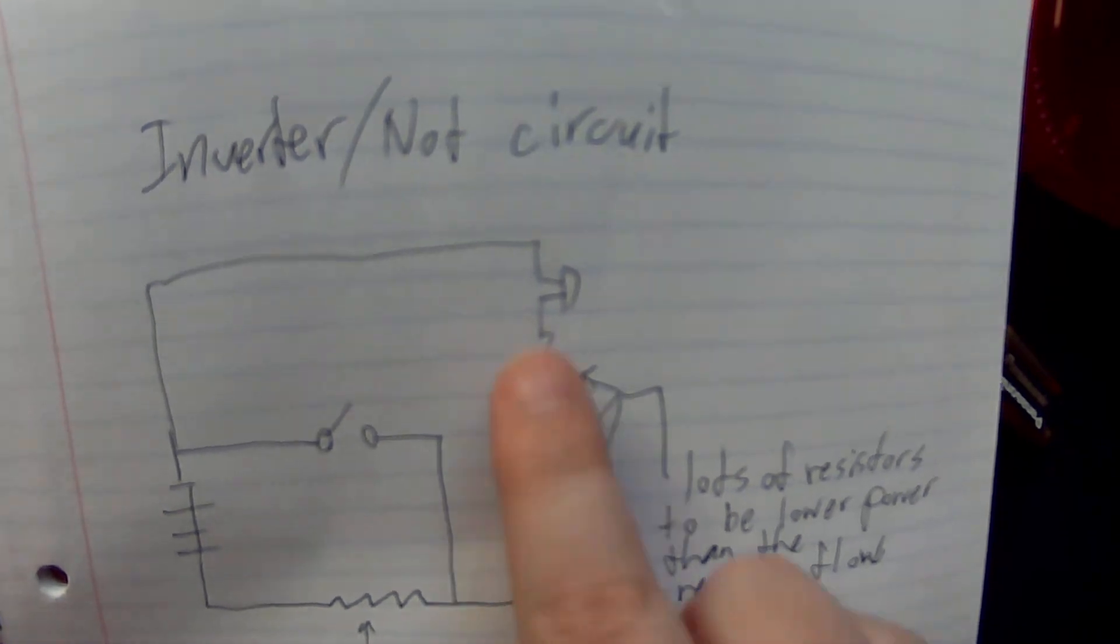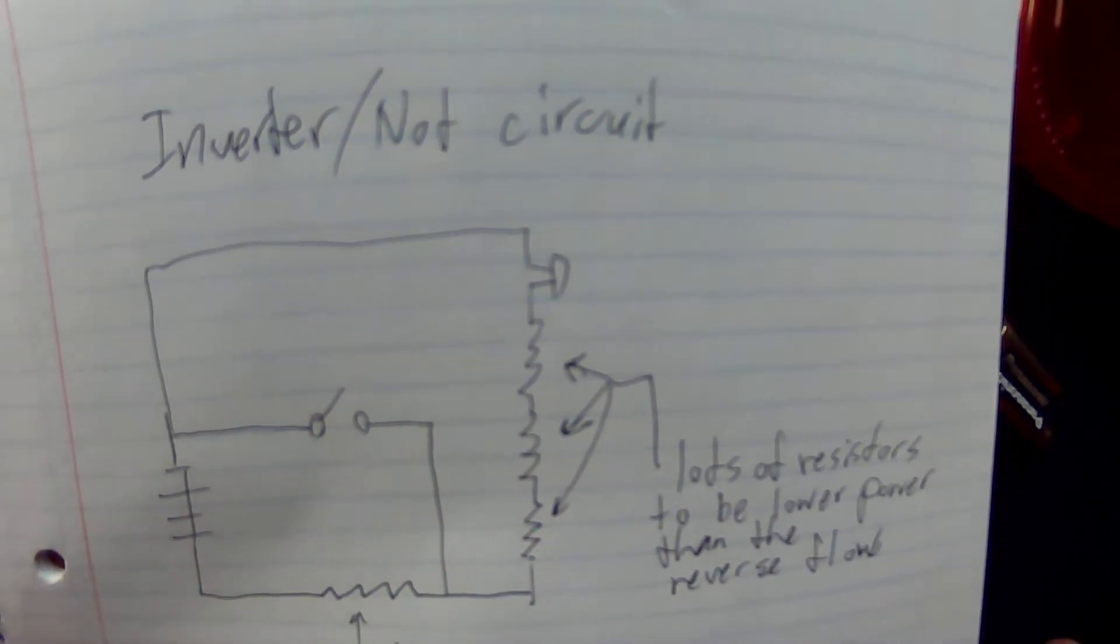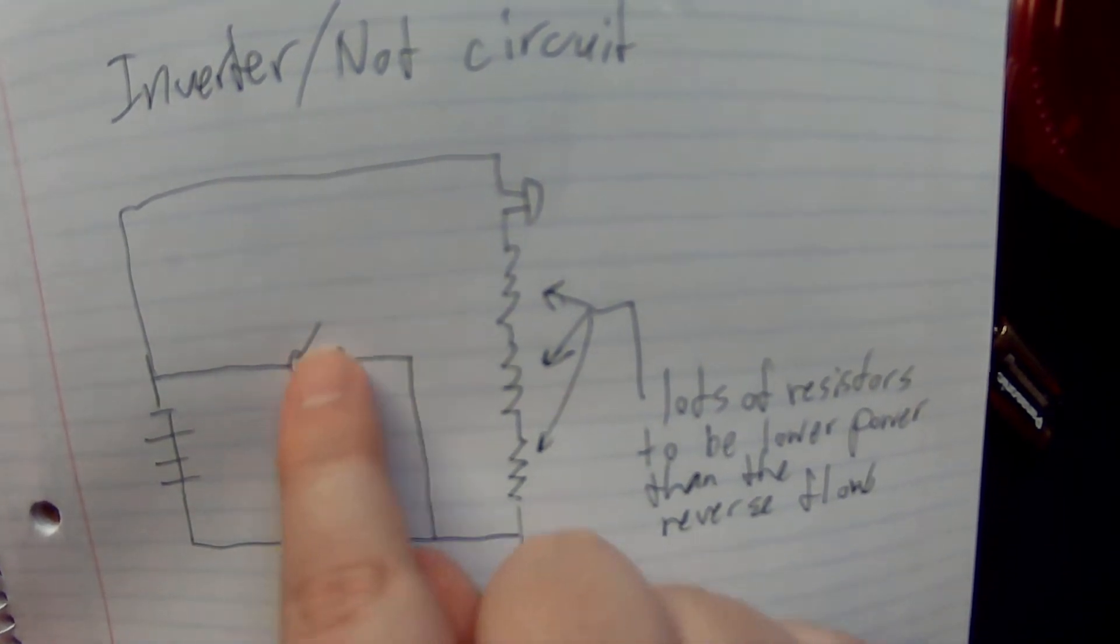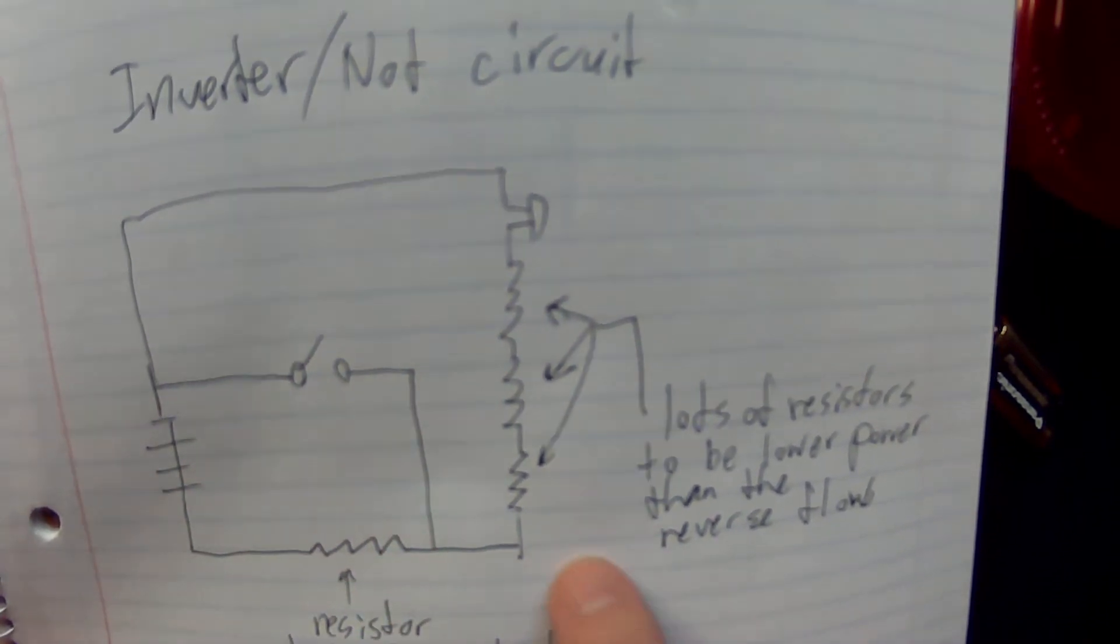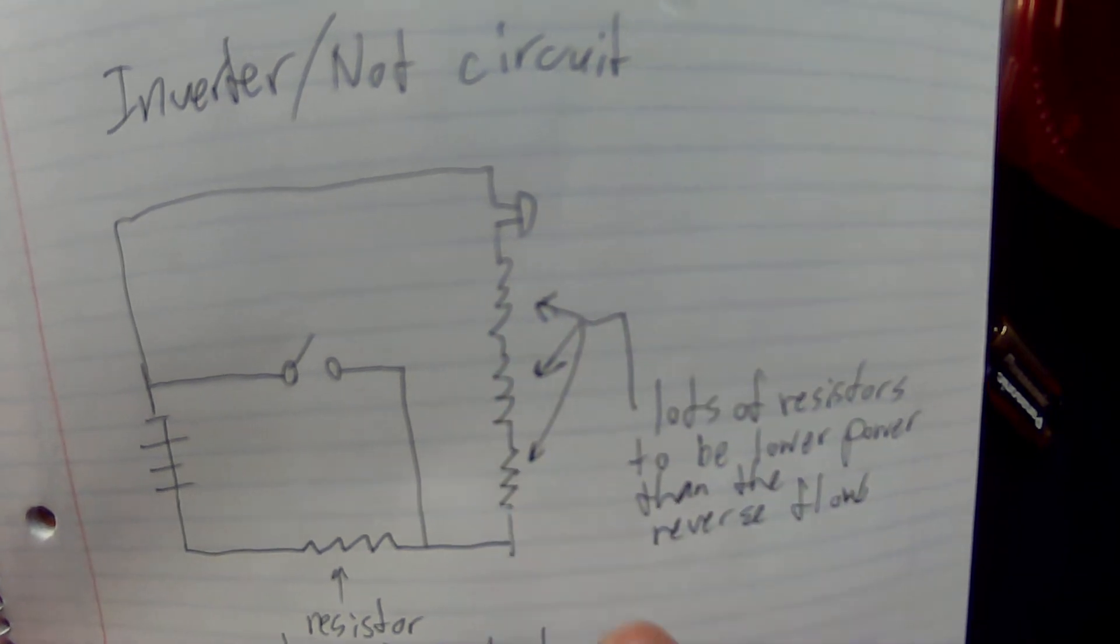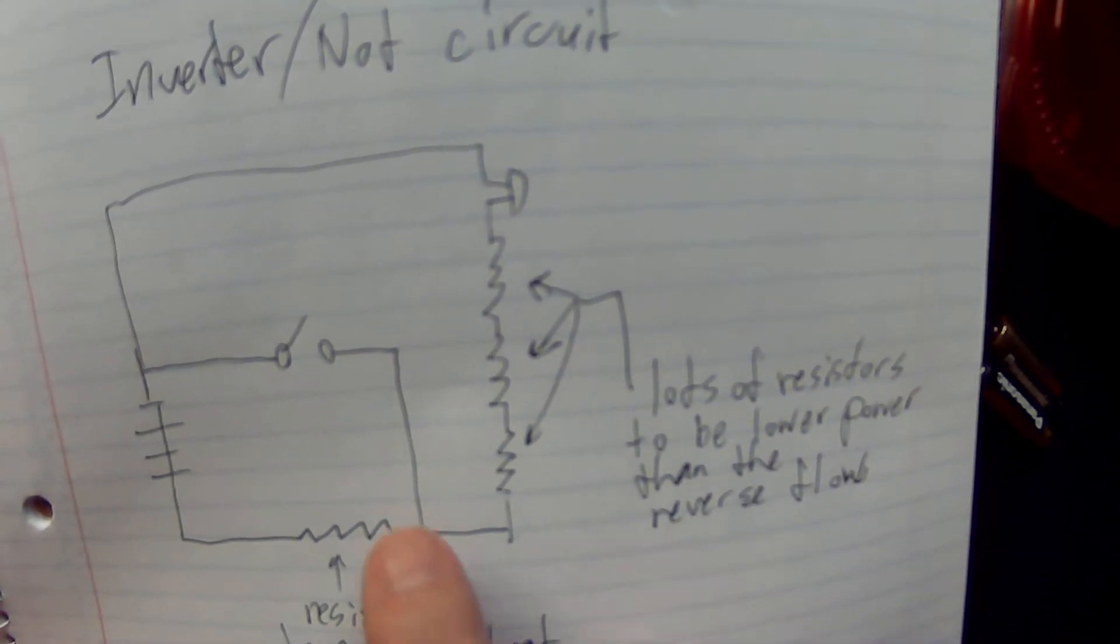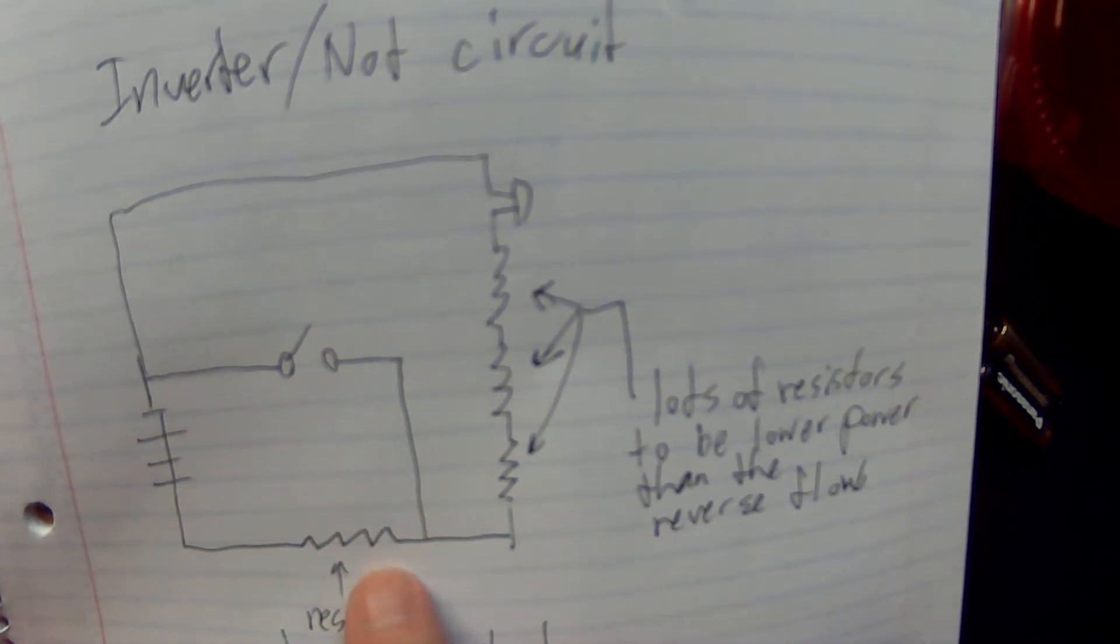Once this is open, this circuit right here is low energy consumption, and this circuit right here with all these resistors is high energy consumption. So when this circuit is closed, the energy wants to follow the path of least resistance.